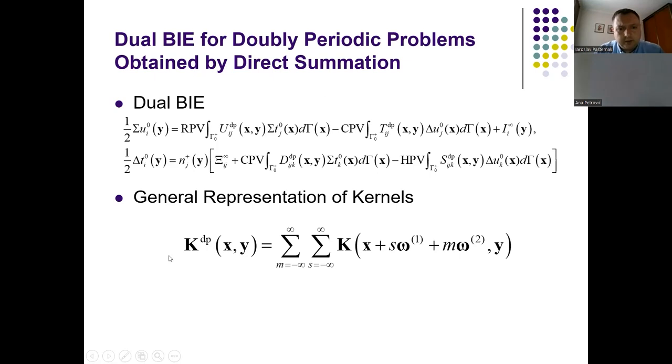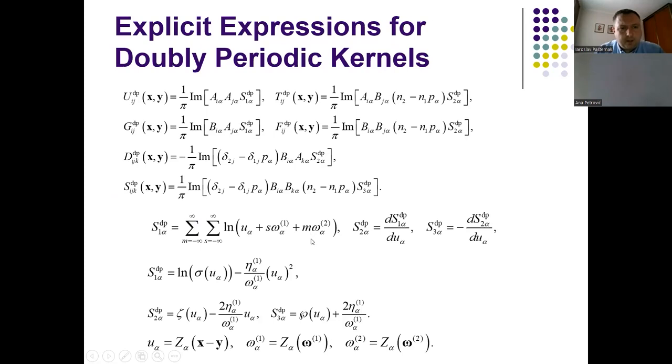The kernels of these equations were represented in the form of double sums. These double sums can be evaluated using the doubly periodic functions, the sigma zeta and Weierstrass p function. Thus these kernels can be evaluated explicitly and can be used in the boundary element model.